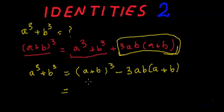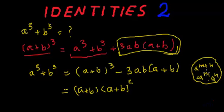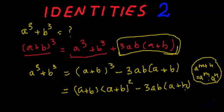This first term can be rewritten as a plus b multiplied by a plus b whole square, because we have the exponent rule: a to the power m+n equals a to the power m multiplied by a to the power n. We have learned this identity earlier. So using this, a plus b whole cube becomes a plus b multiplied by a plus b whole square, minus 3ab multiplied by a plus b.